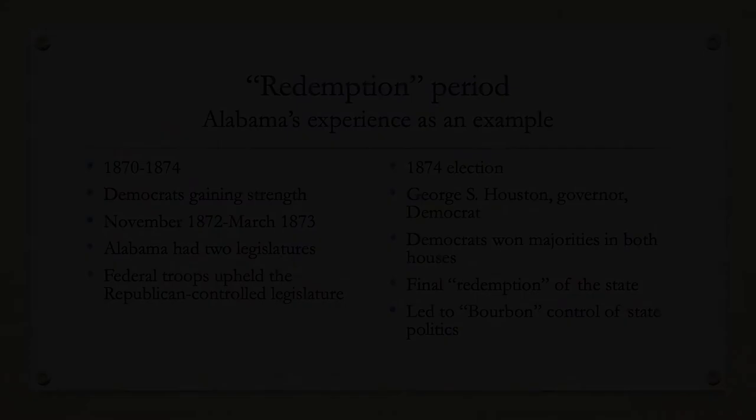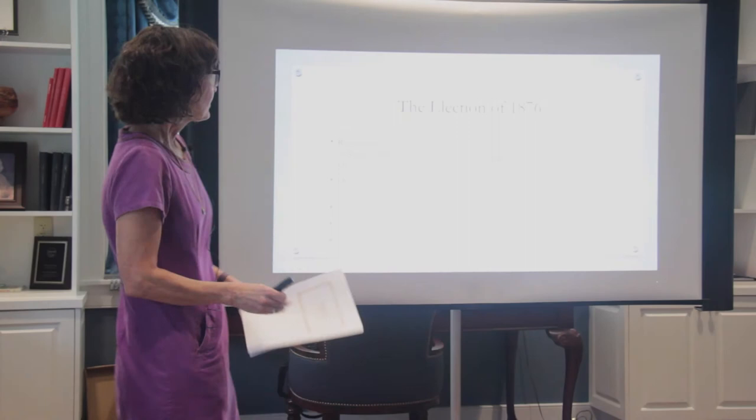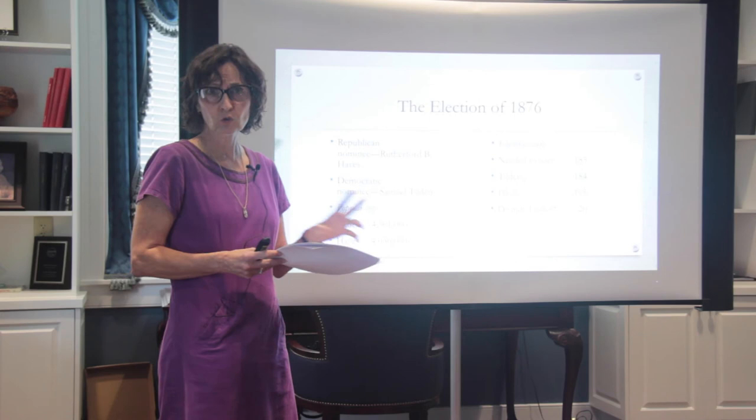Redemption is when the Southern white elite takes over, which is why it's often called Bourbon control — it harkens back to the Bourbon dynasty with Louis XIV in France, that sort of elitism. The election of 1876 is obviously going to be important. Grant would have liked a third term, but the two-term precedent set by George Washington was too important. So our two major nominees are Rutherford B. Hayes, the Republican, and Samuel Tilden, the Democrat.